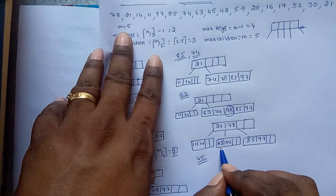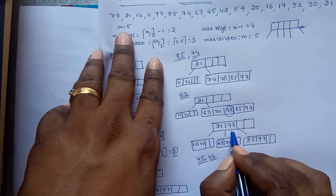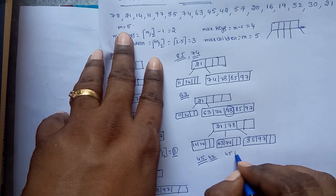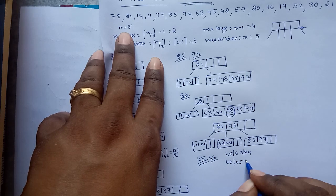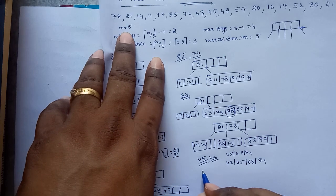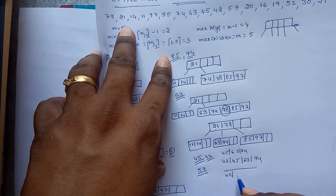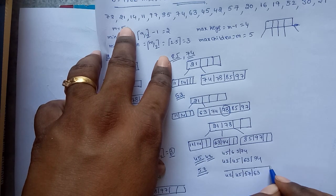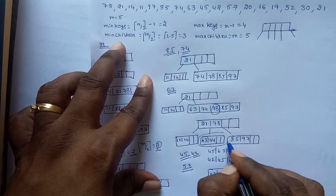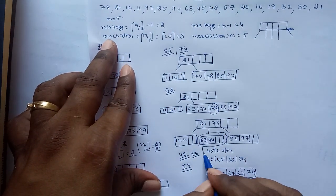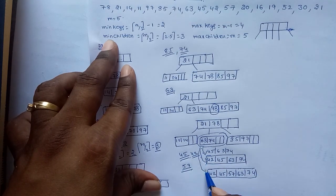Now insert 45: since 45 is greater than 21 and less than 78, it is placed at that middle node. Insert 42: the node becomes 42, 45, 63, 74. Insert 57: the node becomes 42, 45, 57, 63, 74. After inserting these three elements, the node now violates the property.